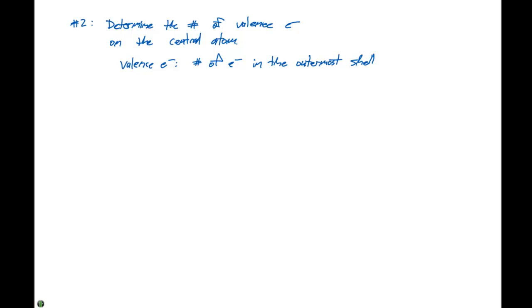And a valence electron is going to be considered to be the number of electrons in the outermost shell. Now, the exception to this is a completely filled d orbital as well as a completely filled f orbital. So if you have a completely filled d or f orbital, these are not considered valence.